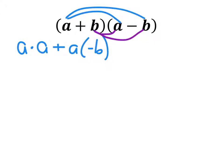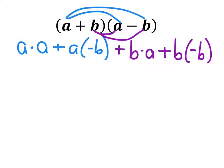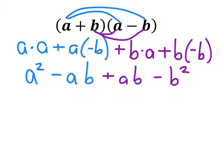Next, I'm going to distribute the b into the other set of parentheses and add all of those together, giving us what we have in purple there. So b times a, plus b times negative b. This negative here is going to make that a minus, and this negative will make that a minus as well. And if we simplify the two a's multiplied together into a squared and the two b's into b squared, that's what we have there.